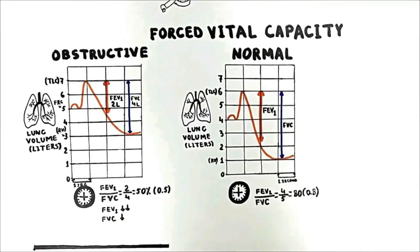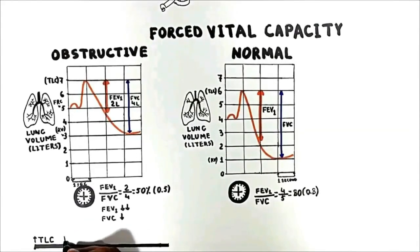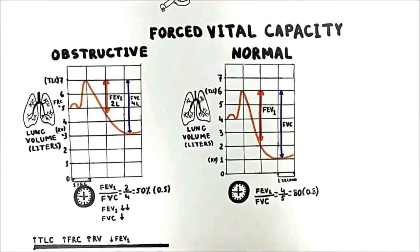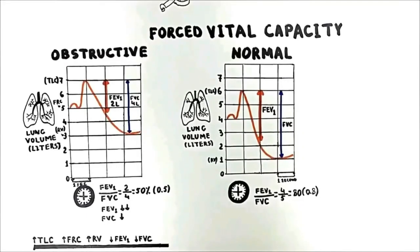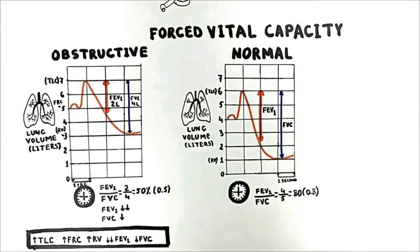To sum up, in obstructive lung diseases: lung compliance increases; total lung capacity is normal or increased; FRC and residual volume increase; FEV1 and FVC decrease, but FEV1 decreases more than FVC; and the FEV1/FVC ratio decreases to approximately 50%.